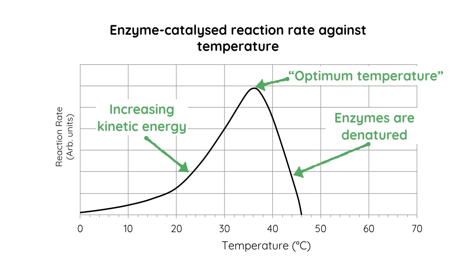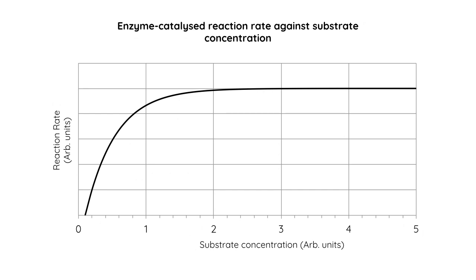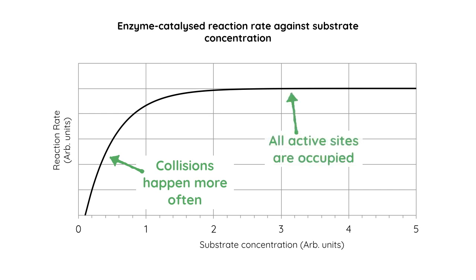Another way to change the rate of an enzyme-catalyzed reaction is by increasing the substrate concentration. Obviously, if we put more substrate in, we are going to have more collisions between substrates and active sites, and therefore there is going to be an increasing rate of reaction. However, eventually this will plateau, because if we keep adding substrate, we'll find that all of the active sites are occupied, and therefore adding more substrate is not going to improve the rate of reaction.